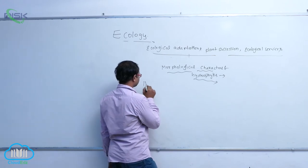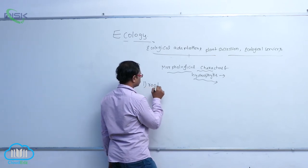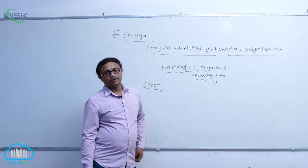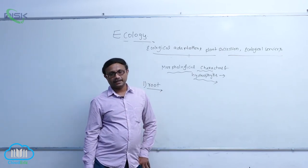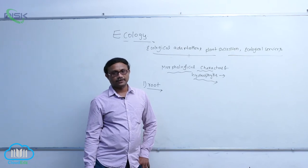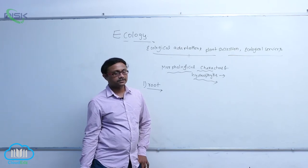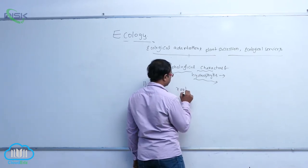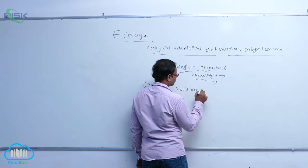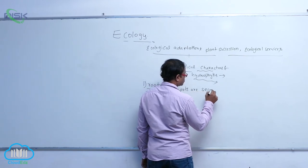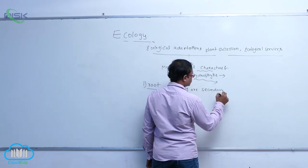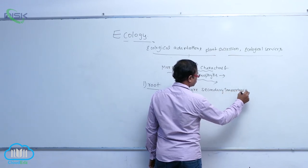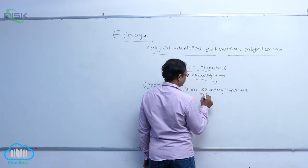The first morphological character is the root. Generally, roots have primary importance in general plants — in mesophytes — but in hydrophytes, roots are of secondary importance.